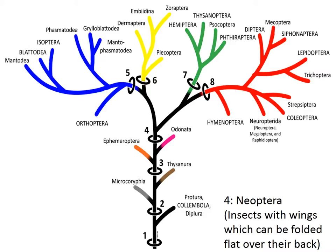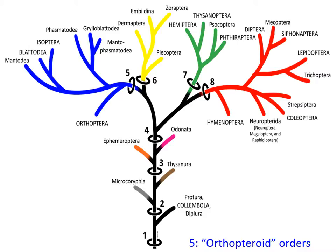At this point in our discussion, we're here at ring number four on this tree — infraclass Neoptera. Neopteran insects are those which possess the musculature that allows them to fold their wings flat over their backs. We'll start our discussion of Neoptera here at ring five, the orthopteroid orders.